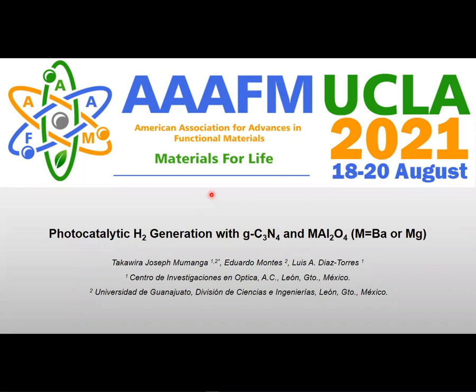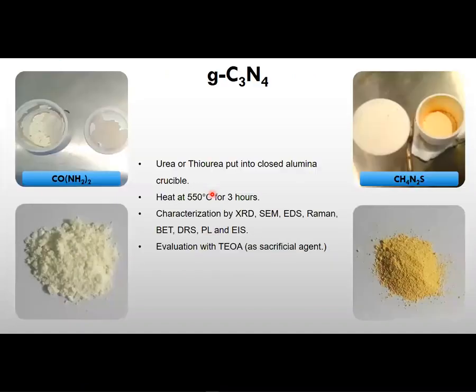In this work, we present photocatalytic hydrogen generation using graphitic carbon nitride and alkaline metal-based aluminates, being barium aluminate or magnesium aluminate. And so to carry out this work,